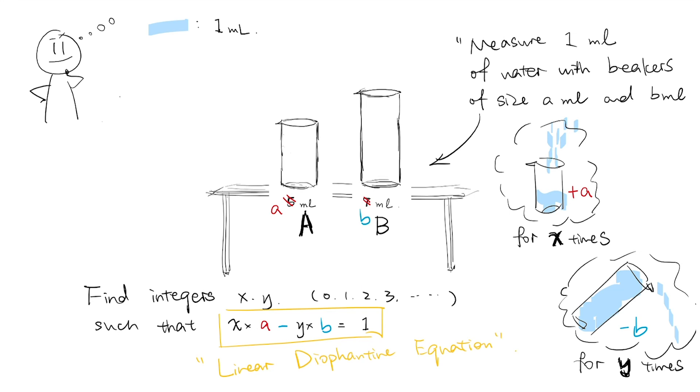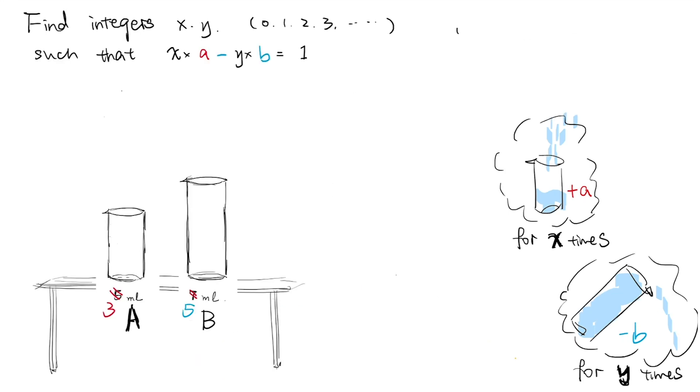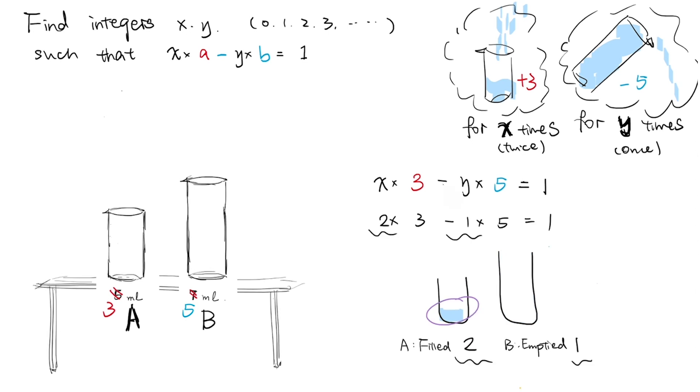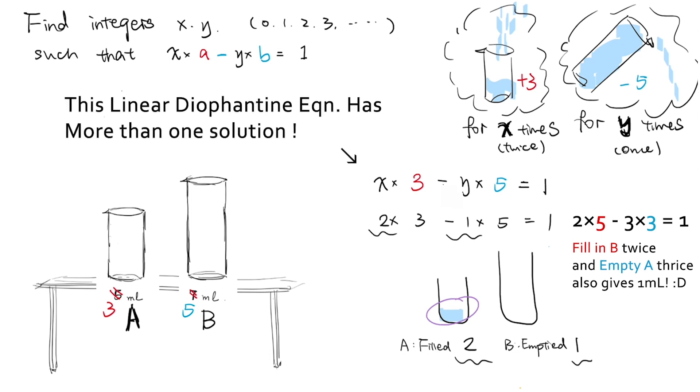For example, given two beakers A of size 3 and B of size 5, we have the linear Diophantine equation, x times 3 minus y times 5 is equal to 1. Noting 2 times 3 minus 5 is equal to 1, this linear Diophantine equation has a solution. In specific, it tells us filling in A twice and emptying B once will give us 1 milliliter. Also, noting 2 times 5 minus 3 times 3 is also equal to 1, we know filling in B twice and emptying A thrice should give 1 milliliter as well. So this linear Diophantine equation has more than one solution.